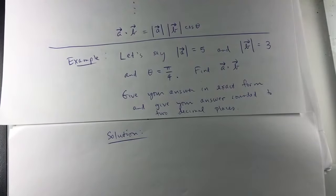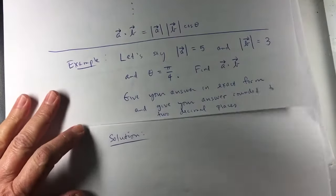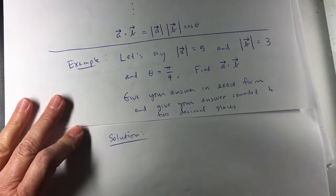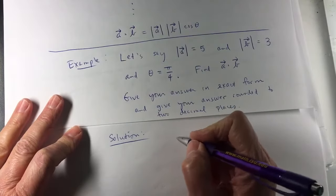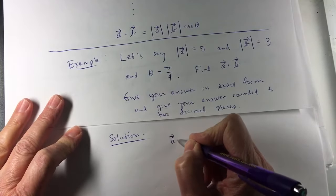So here's a problem. I have the magnitude of vector A is 5, the magnitude of vector B is 3, the angle between them is π over 4, so find A dot B.